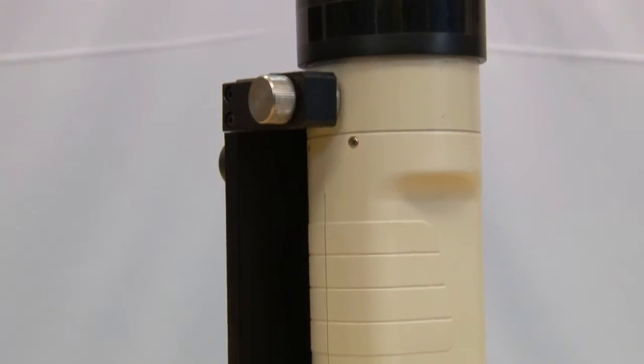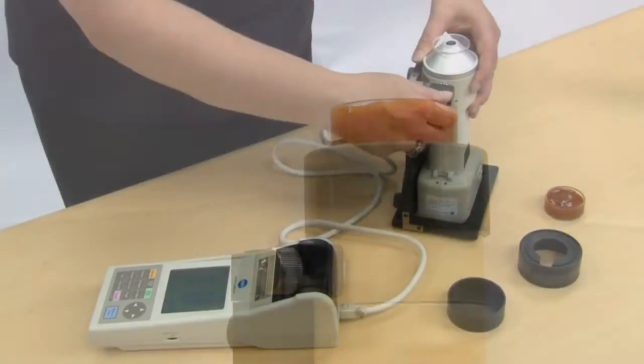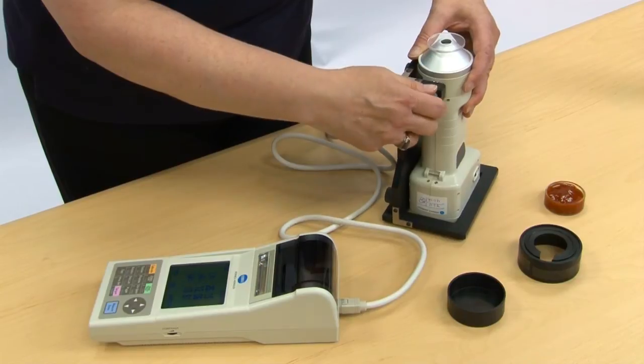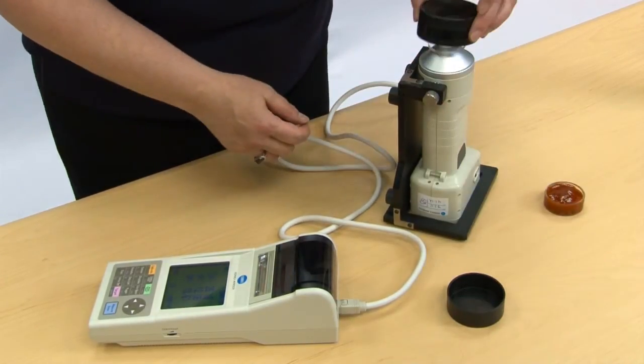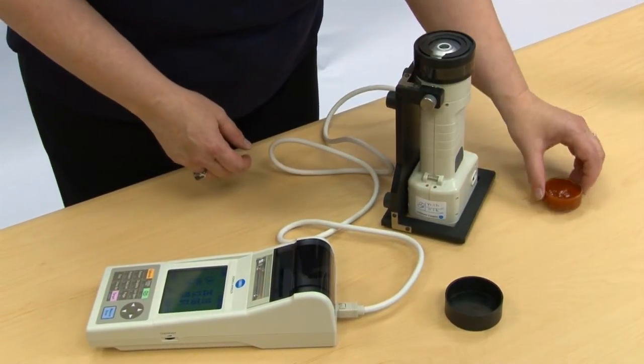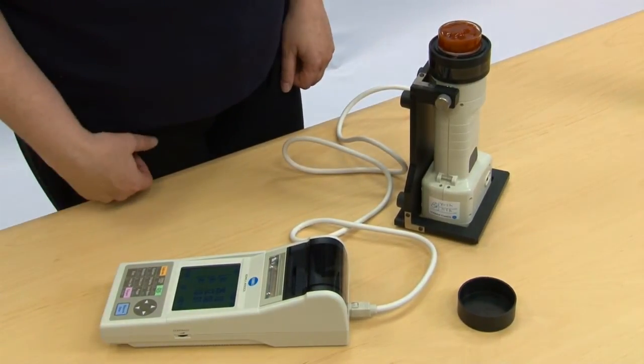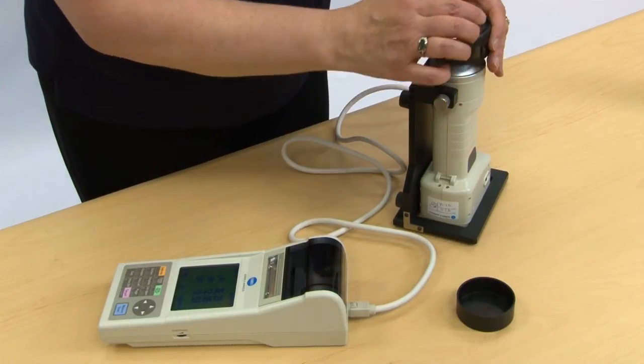The CR400 petri dish holder allows for the measurement of granular, paste, powders, and liquids. Simply place the sample to be measured in the petri dish and measure. It can be used with or without the cap placed on the petri dish holder, depending on the sample type.